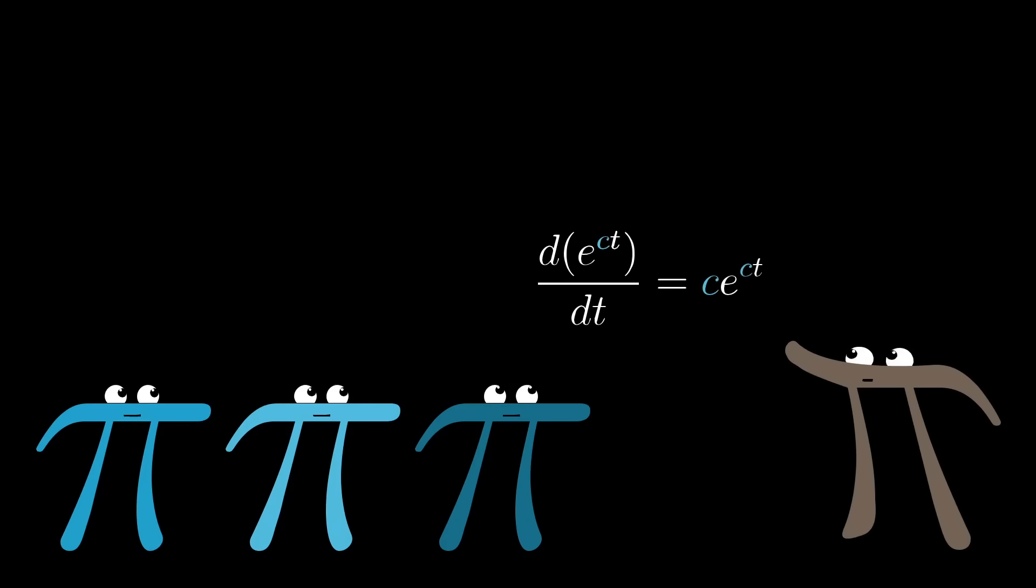Either way, the point is, e to the power of some constant times t is equal to that same constant times itself. And from here, the question of those mystery constants really just comes down to a certain algebraic manipulation.